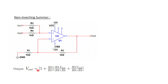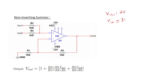In the formula, Vout is given as (1 + R2/R1), which is the gain factor, multiplied by the two inputs being added. Let's consider an example: Vin1 equals 2 volts and Vin2 equals 3 volts, so we expect Vout to be 5 volts, which is 2 plus 3.